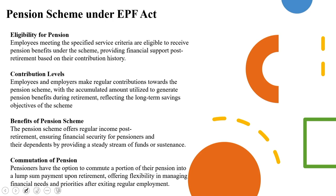When looking at the pension scheme under the EPF Act, employees meeting the specified service criteria are eligible to receive pension benefits. Both employees and employers make regular equal contributions towards the pension scheme, with the accumulated amount utilized to generate pension benefits during retirement. This reflects the long-term savings objective of the scheme. The pension scheme offers regular income post-retirement, ensures financial security for pensioners and their dependents by providing a steady stream of funds, and allows commutation of pension — meaning pensioners have the option to convert a portion of their pension into a lump sum payment upon retirement.